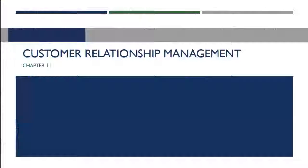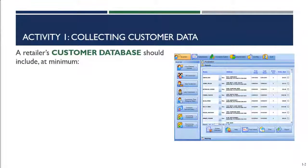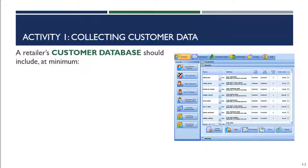In this lecture, we're going to talk about activities one and two in the customer relationship management process. Activity one is collecting customer data. This is the first step in the CRM process — we want to construct a customer database. A customer database contains all of the data that the firm has collected about its customers, and it is the foundation for all subsequent CRM activities.